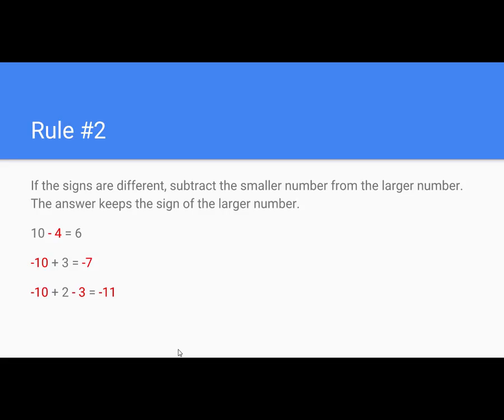Rule number 2: If the signs are different, subtract the smaller number from the larger number. The answer keeps the sign of the larger number.